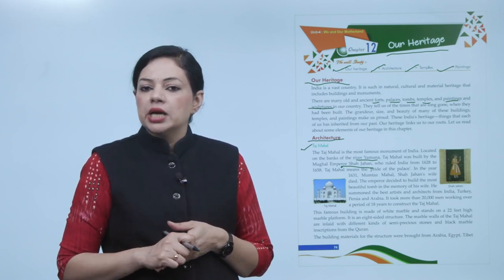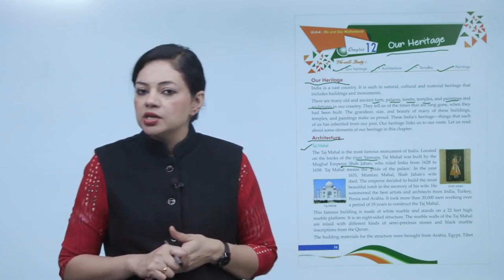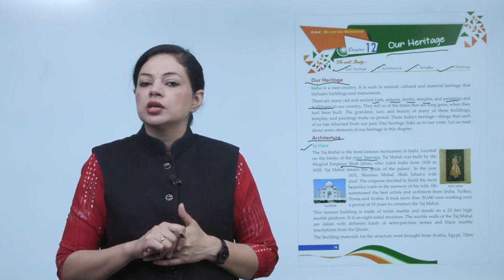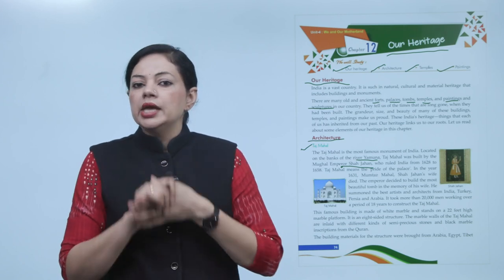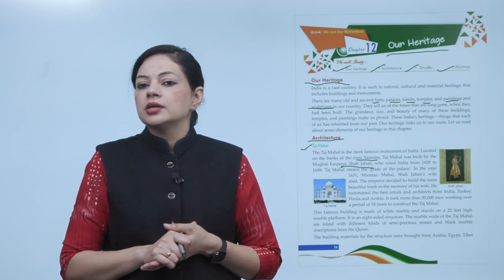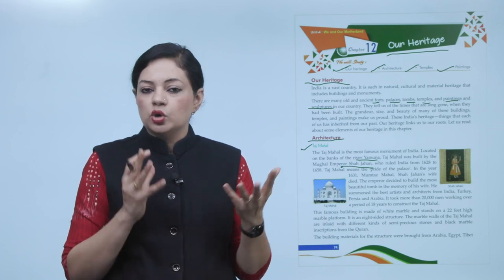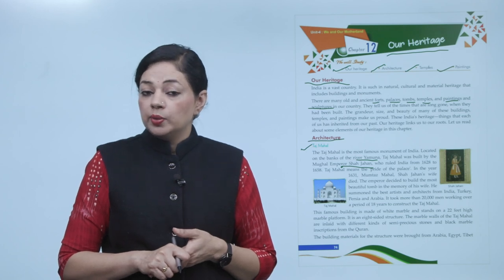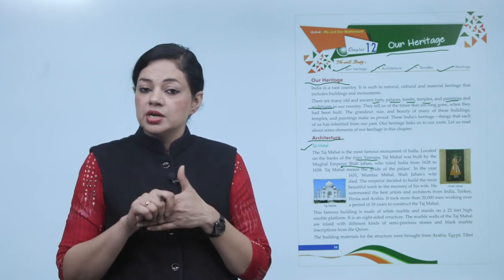In the year 1631, Mumtaj Mahal, Shah Jahan's wife, died. 1631 mein Shah Jahan ki wife Mumtaj Mahal ki death ho gayi. Isliye Shah Jahan ne decide kiya ki uski yaad mein ek bahut sundar tomb banvayega. He summoned the best artists and architects from India, Turkey, Persia and Arabia. It took more than 20,000 men working over a period of 18 years to construct the Taj Mahal — 20,000 logon ne milke Taj Mahal ko banaya tha, 18 saal lage the.